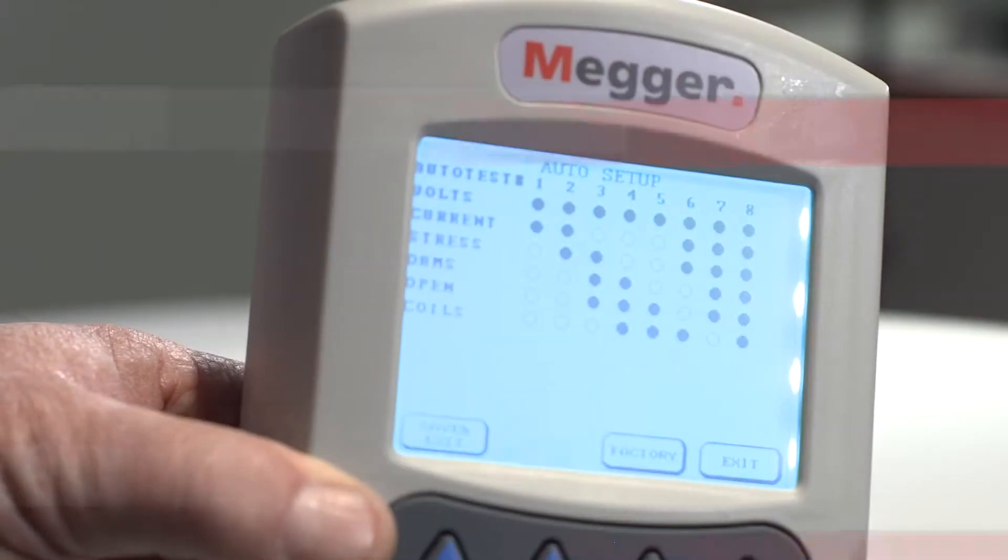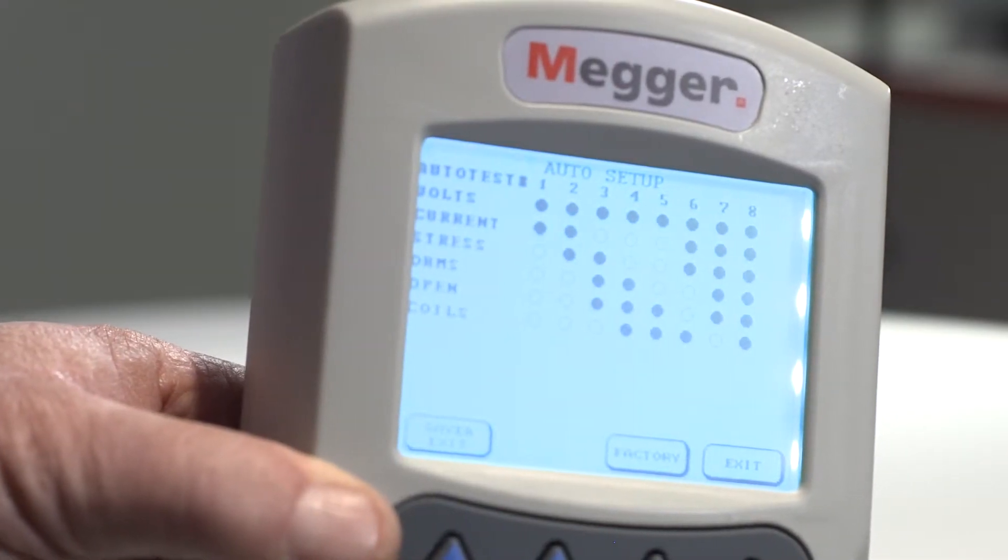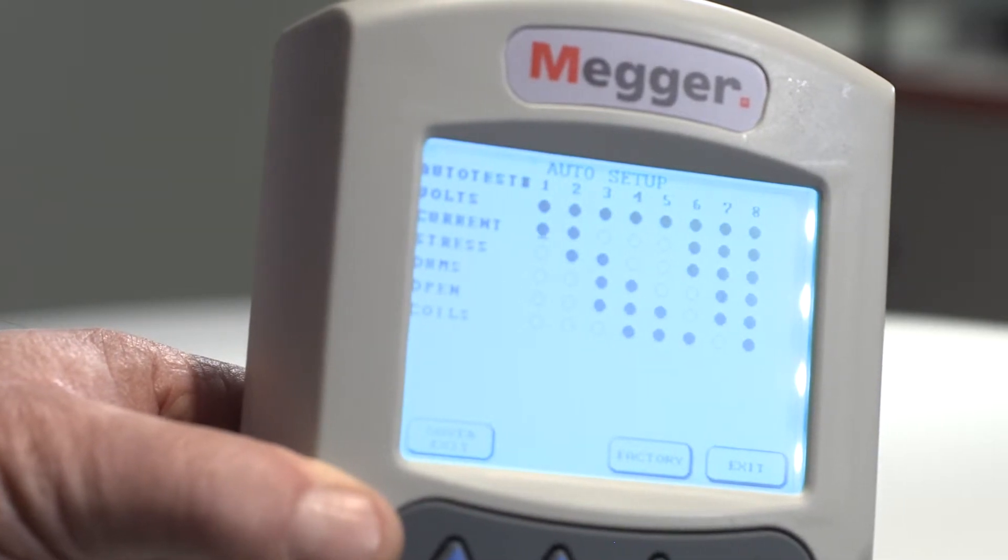In this segment, we'll review the auto test setup with the HT1000-2. The HT1000-2 can perform eight custom combinations of tests programmed by the user and selected for use on an as-needed basis for individual pairs, bulk pair recovery, etc.